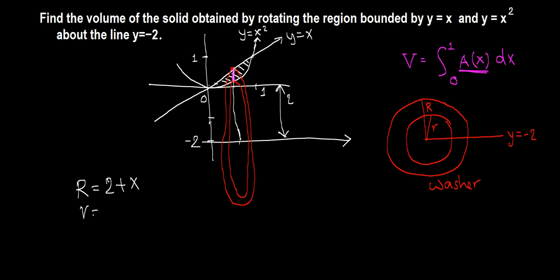How about inner radius? Same thing: here to here this is always 2 plus the lower curve, which is x squared. So 2 plus y, this vertical distance is y, and y is given by x squared. So 2 plus x squared.